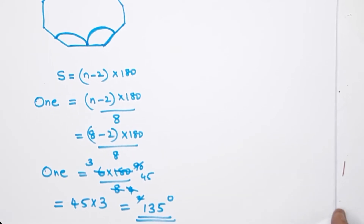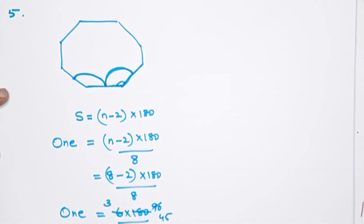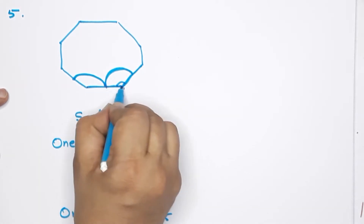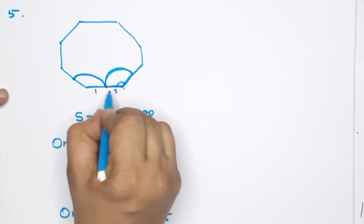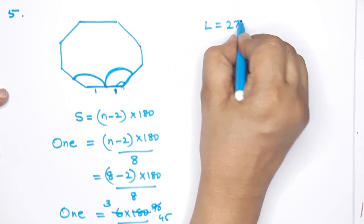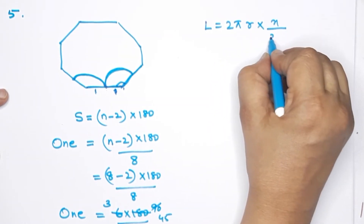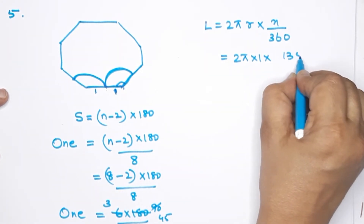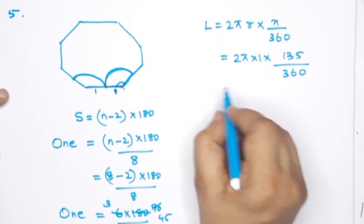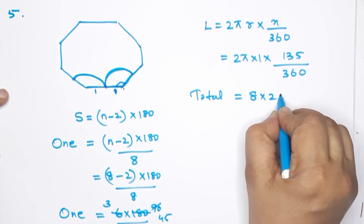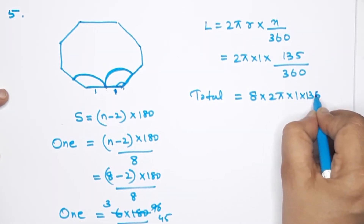So the interior angle is 135 degrees. We have 8 such angles. The side length is 2 cm, meaning the radius is 1 cm. Each arc length is 2πr × (x/360). The total perimeter is equal to 8 × 2π × 1 × (135/360).